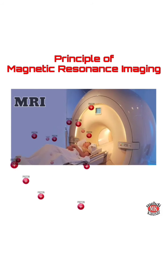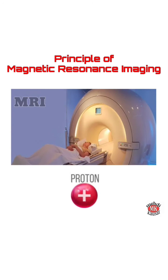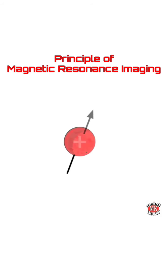MRI uses hydrogen nuclei or protons which are abundant in the human body. All protons possess spinning motion and this spinning motion creates a small magnetic field.